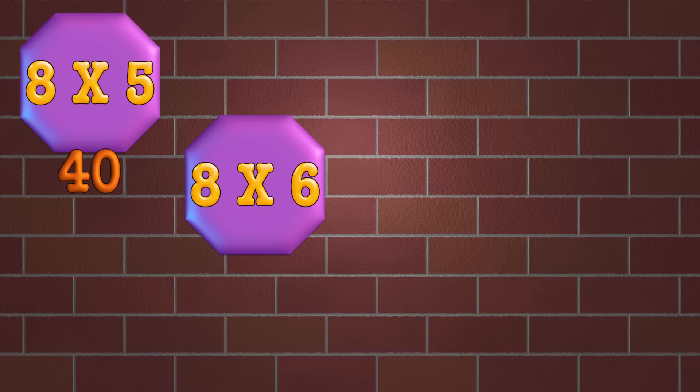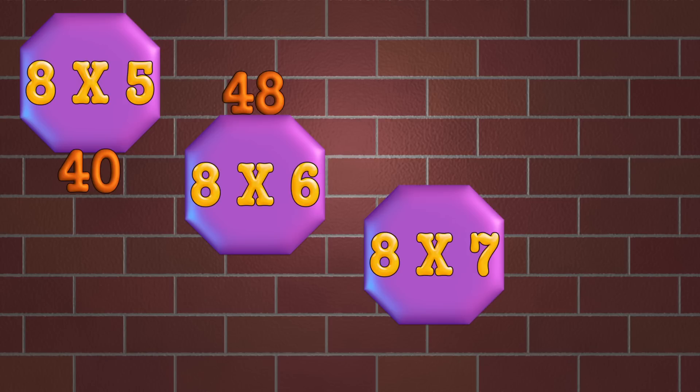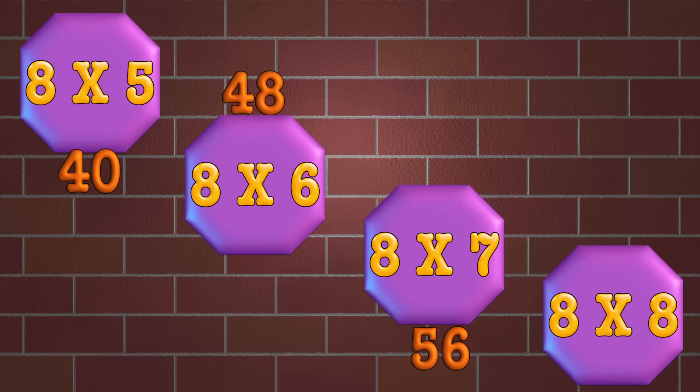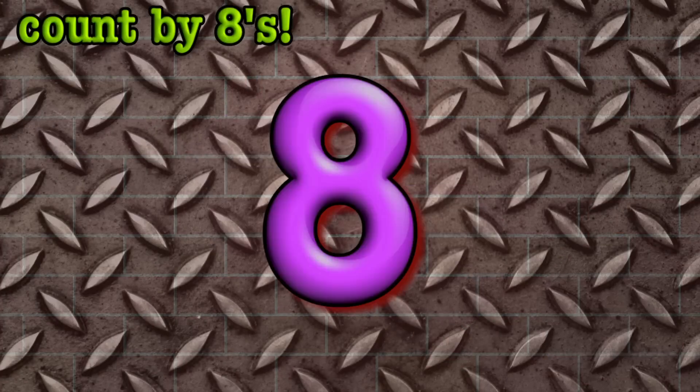8 times 5 is 40. 8 times 6 is 48. 8 times 7 is 56. 8 times 8 is 64.